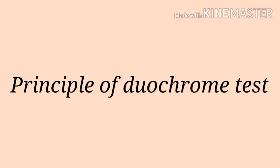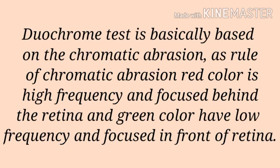The duochrome test is basically based on the principle of chromatic aberration. According to the rule of chromatic aberration, red color has a high frequency and focuses behind the retina, and green color has a low frequency and focuses in front of the retina.